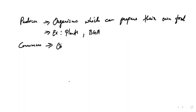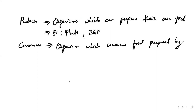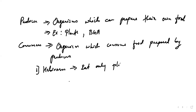Consumers means the organisms which consume the food prepared by producers. The first category is herbivore — they will eat only plants — like goat or cow.